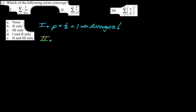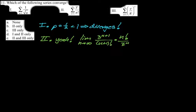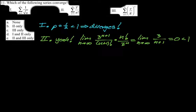Number two — I'm thinking this definitely converges because of the location of the factorial. If you had to, you would do the ratio test. The ratio test simplifies to just three over n plus one. If n goes to infinity, that's zero, which is less than one, so it converges.